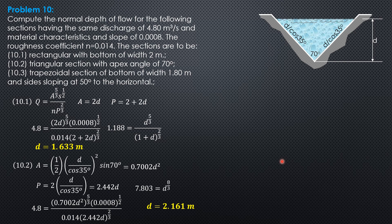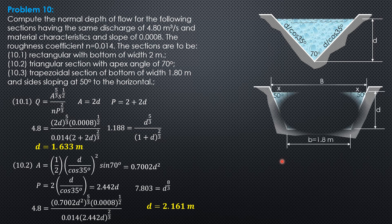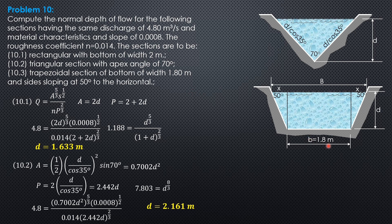And for the third, trapezoidal sections. Bottom of width 1.8, this is the depth. Side sloping 50 degrees, that's also 50 degrees. I'll call this x. Tangent of 50 is D over x, so x is D over tangent of 50.